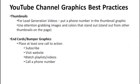As promised, here are a few YouTube channel graphics best practices for thumbnails. If you're using videos for lead generation, put a phone number in your thumbnail graphic. Use attention-grabbing images and colors to stand out from the other thumbnails on the page. If you use the Video Domination Blueprint, you can actually get your thumbnail to be the only one showing up in the search results. For end card bumper graphics, place at least one call to action — telling people to subscribe, visit your website, watch your other videos or playlists, or call a phone number.